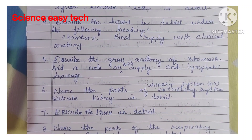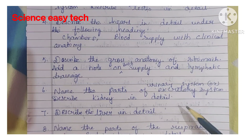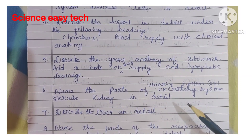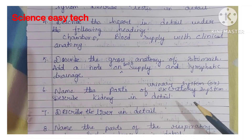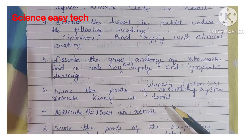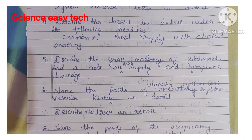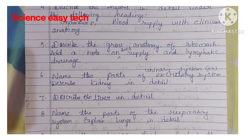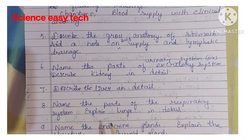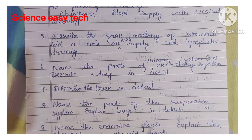Sixth question, name the parts of the urinary system or excretory system — sometimes they ask as urinary system, sometimes as excretory system — and describe kidney in detail. Seventh question, describe the liver in detail. Eighth question, name the parts of the respiratory system and explain lungs in detail.